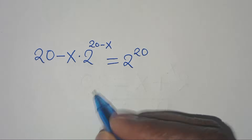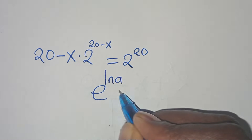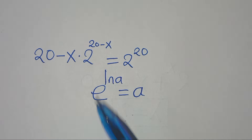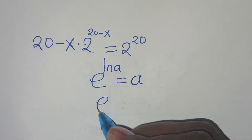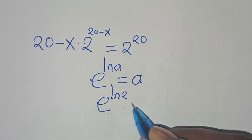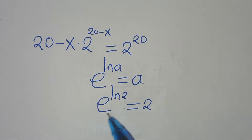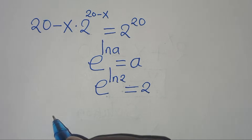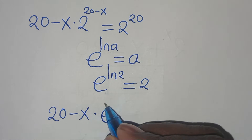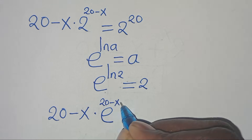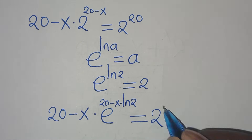The next step is to introduce the exponent property: e to the power of ln(a) gives us a value of a. We can express 2 in terms of exponents — e to the power of ln(2) is the same thing as 2 — and substitute, so that we have (20 minus x) times e to the power of (20 minus x) times ln(2), equals 2 to the power of 20.